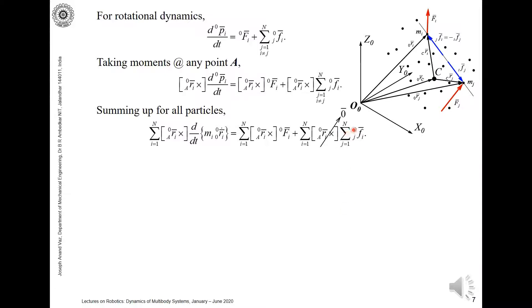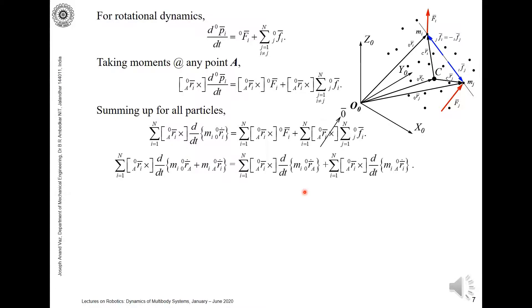The internal force term becomes zero. When you take the moment about point A for the internal force acting on the i-th particle, it is counterbalanced by the force on the j-th particle due to particle i, which acts in the opposite direction. So these moments cancel off. You can consider any combination of particles and you will find this term cancelling out.